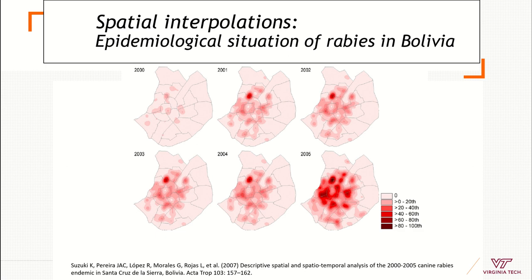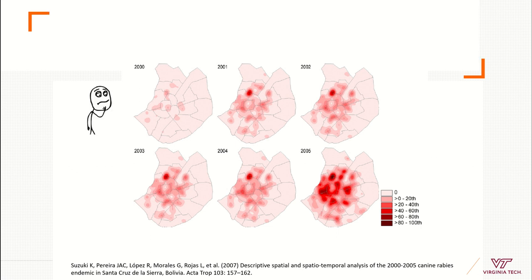This map shows cases of rabies in Bolivia, and here you can see the concentration of cases across time — from few cases to many cases. But again, here we see only the density of cases.